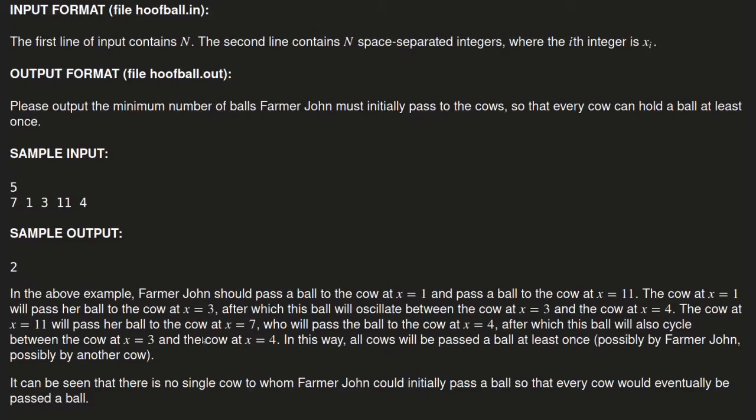For example, in this paragraph right here, when Farmer John passes the ball to cow number one, the cow number one immediately passes it to three and four. Or rather passes it to three first, who then passes it to four, then passes it back to three. So it's oscillating there. The cow number one is considered a source because once she gets the ball, she'll give it away and not receive anything. So that cow at spot number one does not receive any balls. So we require at least one ball to cover that case.